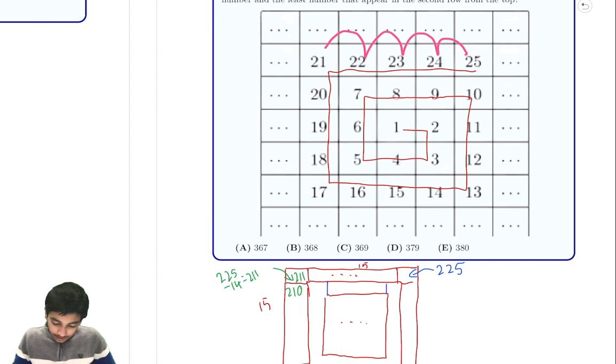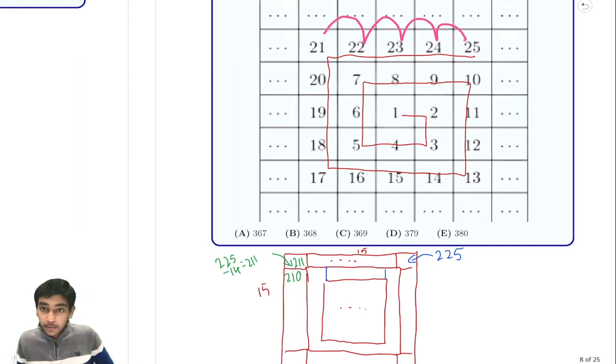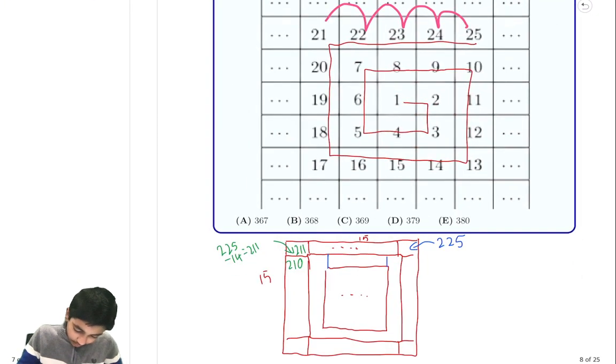So now we can see that 210. And since 210 is the first value to appear when going backwards, 210 has to be the largest value. Great. The greatest value is 210. Now we're done with half of the problem.